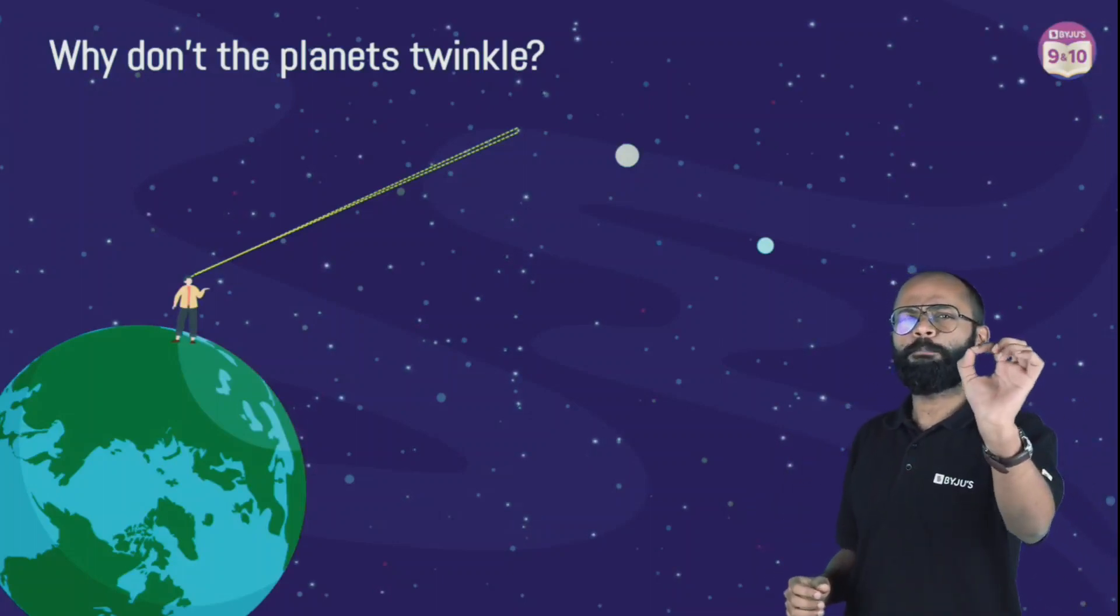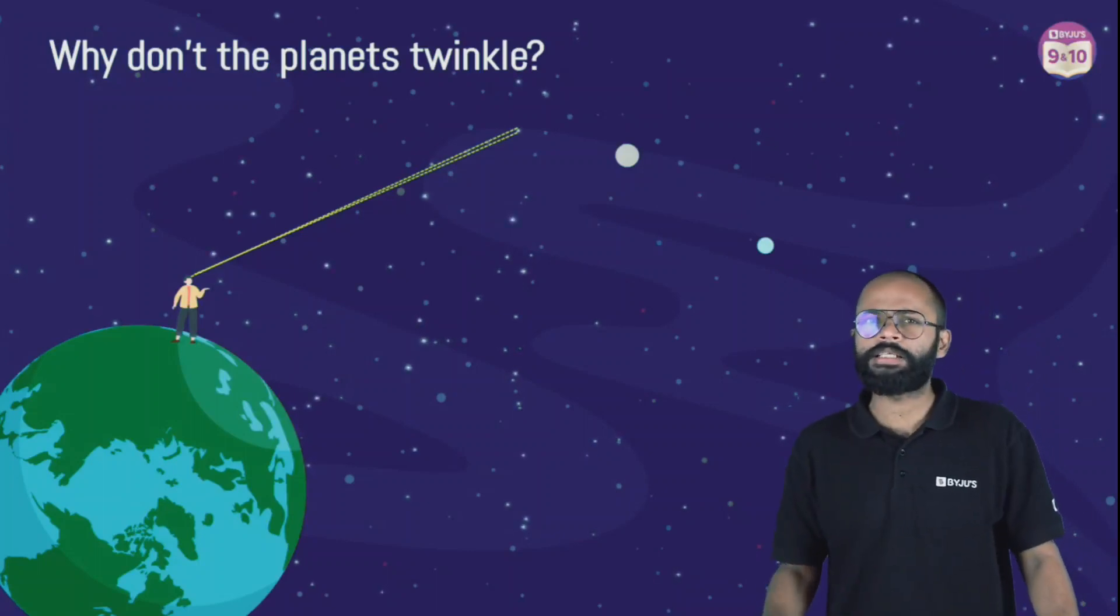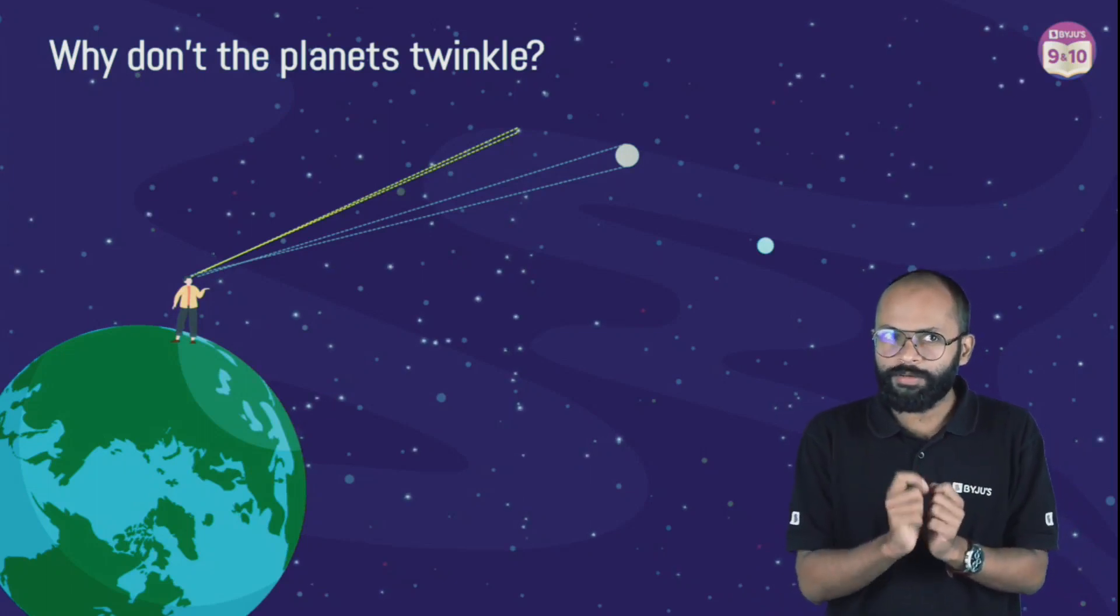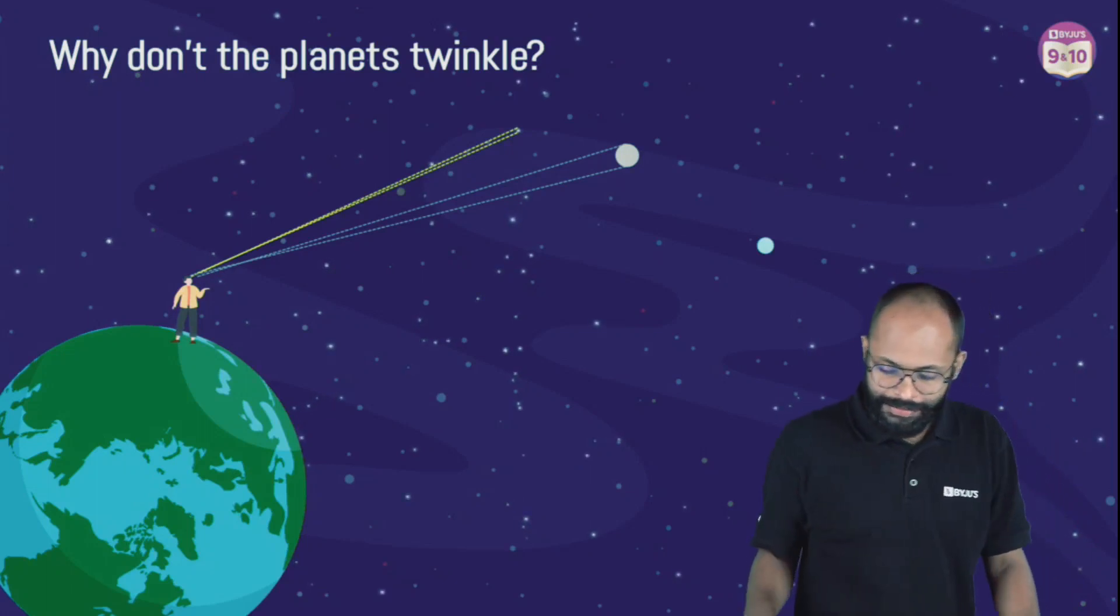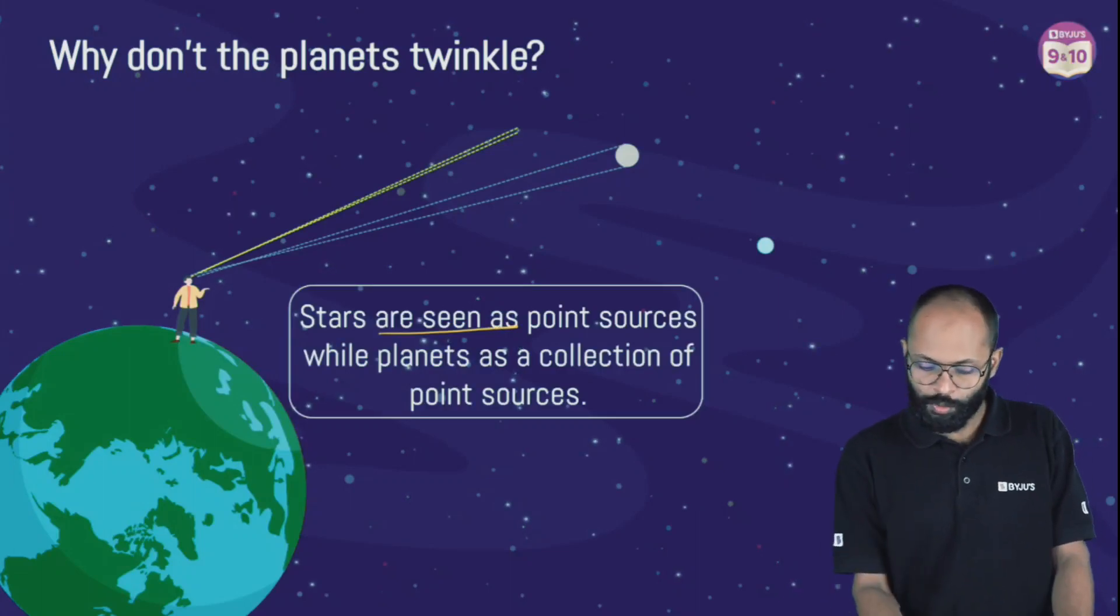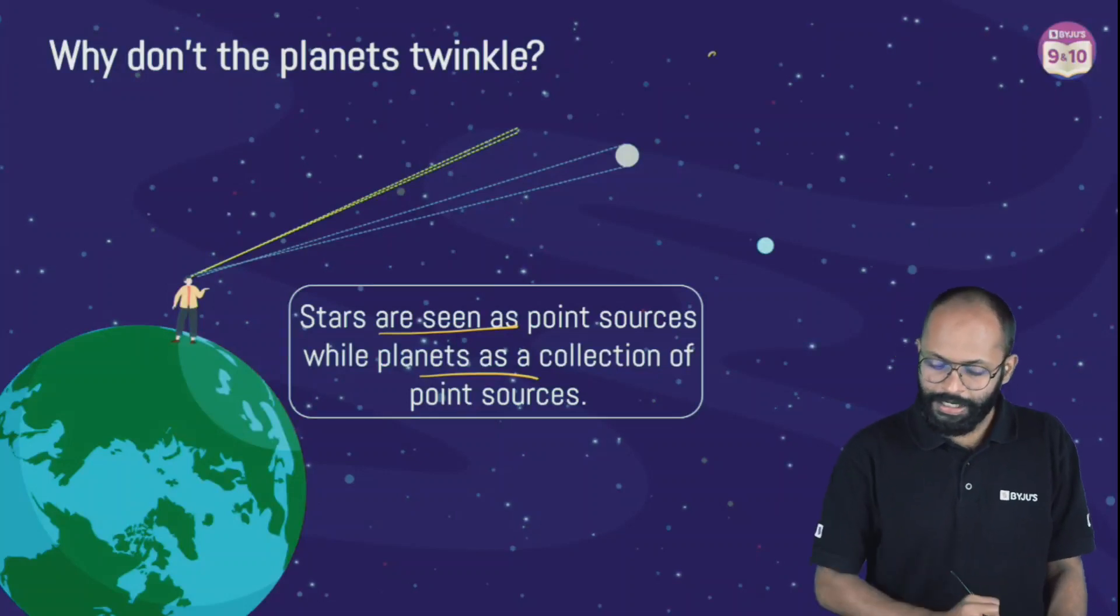Stars are very far from you, you can say they are like a point of light, they're a point source of light. But planets, they are closer to you, so light is not coming from a point, you can say light is coming from multiple points. Stars are seen as point sources while planets are a collection of point sources.